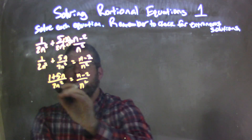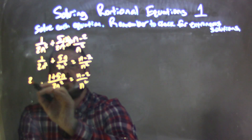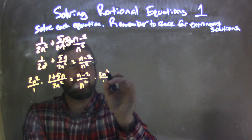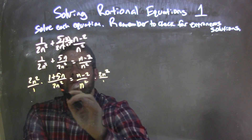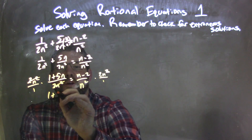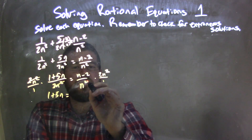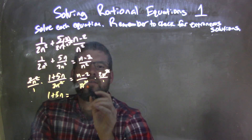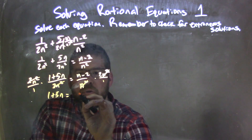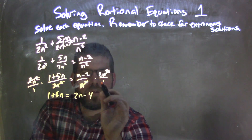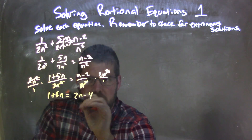Now that I have the same base, I can combine the two and get 1 plus 5n over 2n squared equals n minus 2 over n squared. So now what I'm going to do is multiply both sides by 2n squared over 1. That eliminates the 2n squared on the left, giving me 1 plus 5n. The n squared part is eliminated on the right, so I have the 2. I distribute the 2 across and get 2n minus 4.